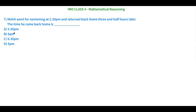Now let's see the seventh question for today. Mohith went for a swimming class at 2:30 PM and returned back home 3 and a half hours later. The time he came back home is blank. The options given are 5:30 PM, 6 PM, 6:30 PM, and 5 PM. The keywords: he went at 2:30 PM.